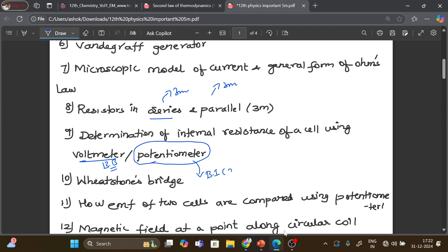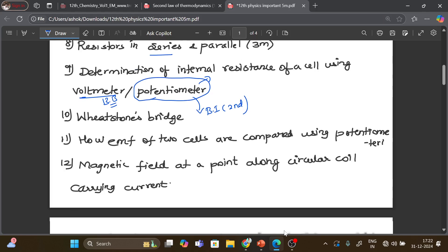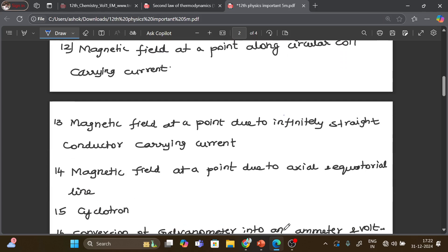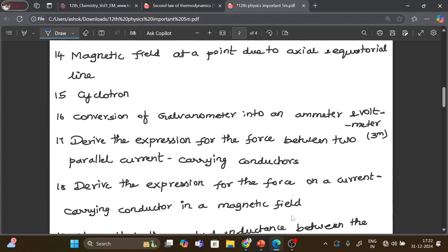Second lesson, let's check that. This is the question. Then Wheatstone bridge, how EMF of two cells are compared using potentiometer, magnetic field along circular coil conductor. Infinitely long straight conductor, so very important question.